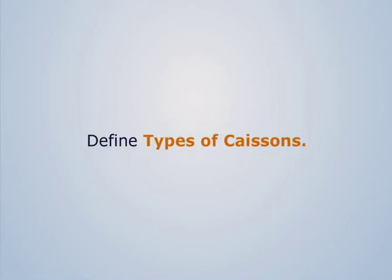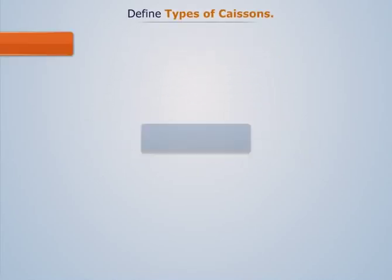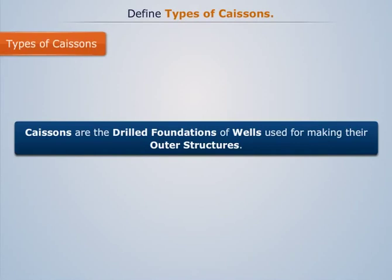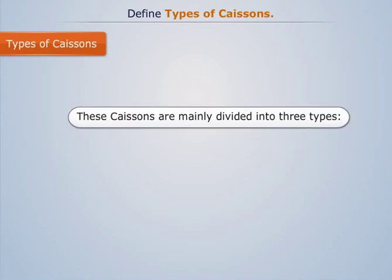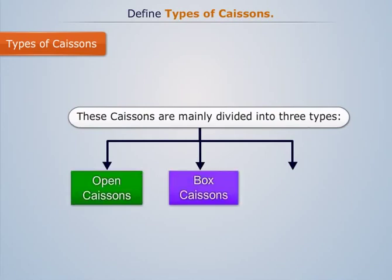Define types of caissons. Caissons are the drilled foundations of wells used for making their outer structures. These caissons are mainly divided into three types: open caissons, box caissons, and pneumatic caissons.